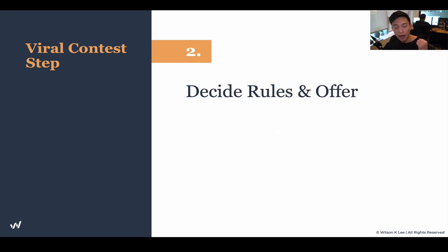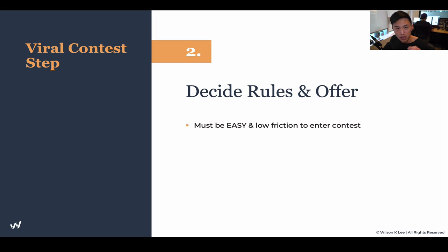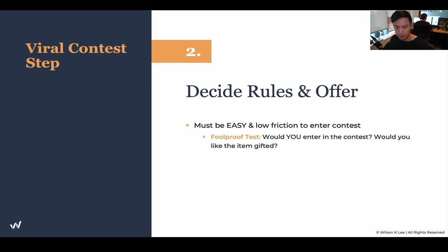Once you understand your objective — say, increasing awareness because your doors just opened — it's time to decide the rules and the offer, aligned to that objective. It must be super easy. This must be at a grade-five level. Even a grade-five student should understand how the whole process works, because if you have too much friction or it's too difficult to understand, people will not enter — and that defeats the whole purpose of running a viral contest. The full proof test: would you actually enter the contest? Do you like the item being gifted? If you don't like it, why would you expect your audience to enjoy it? Be super honest with yourself — don't create something just for the sake of creating it.